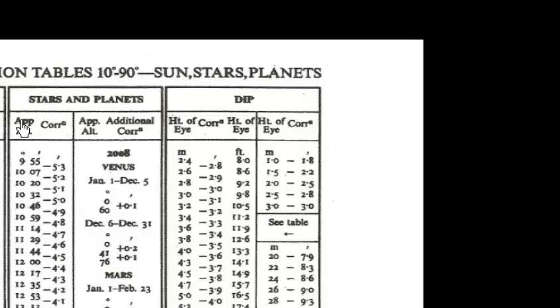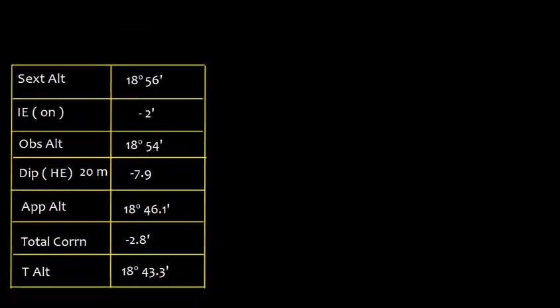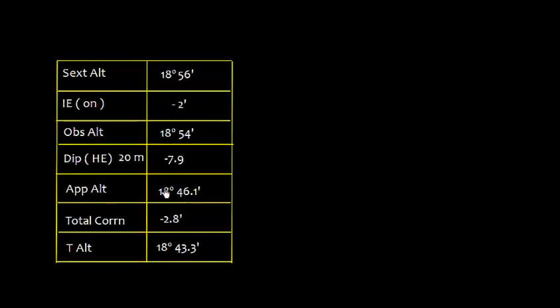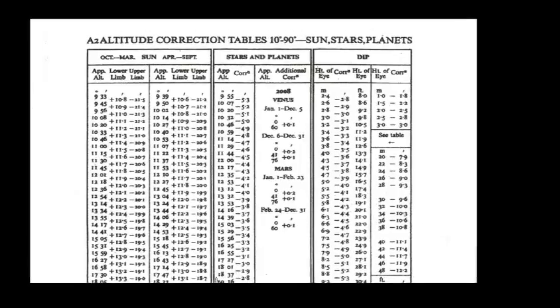Now we need to look at this table, stars and planets, where it is apparent altitude and correction. So we get this value: the apparent altitude is 18° 46.1'. Need to find the total correction for this 18° 46.1'. Let me just go back to that same table.